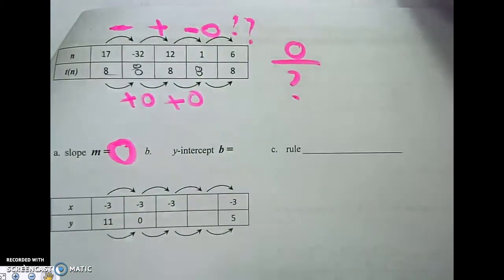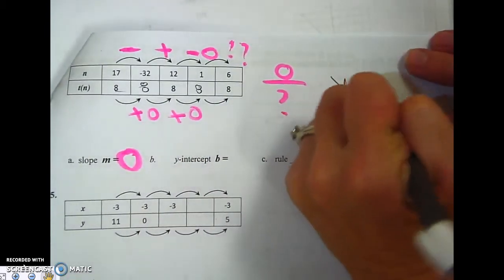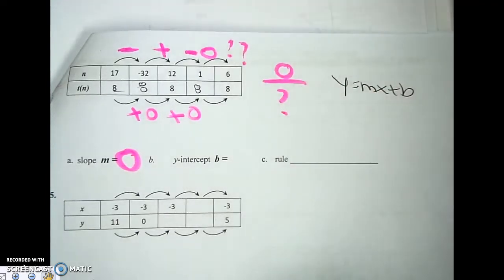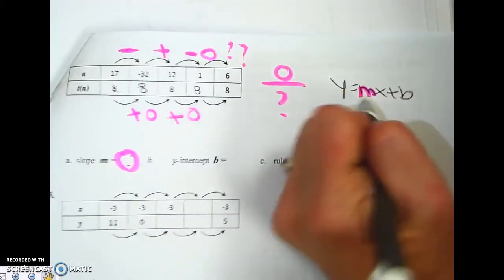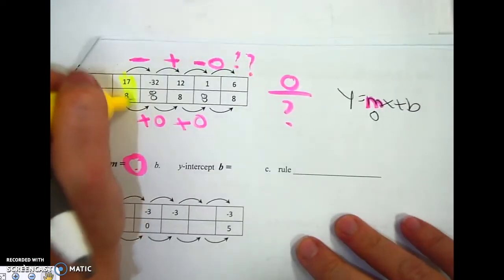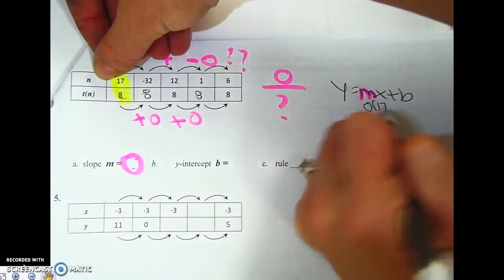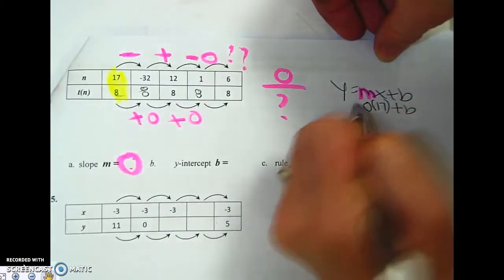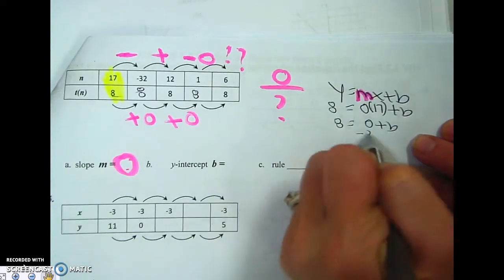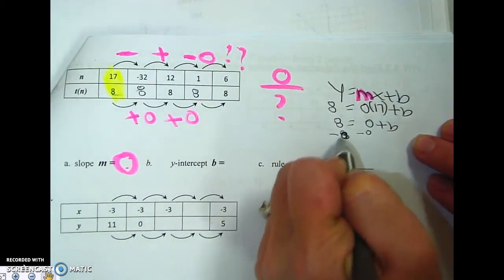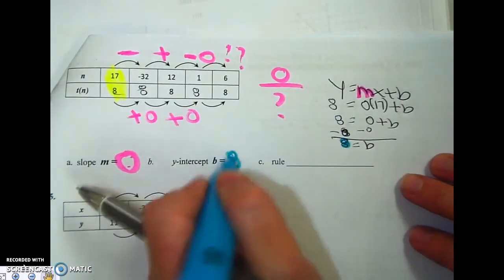So I don't see the y-intercept. So what am I going to do? Let me zoom this out a little bit. Y equals m x plus b. If you look, my m is 0. I'm going to pick the first point, because that's easiest for me. My x is 17. I know it says n, but it's the same thing. I don't know my b. And my y is 8. Anything times 0 is 0. Minus 0, minus 0. 8 equals b. I just got my b. Boom.